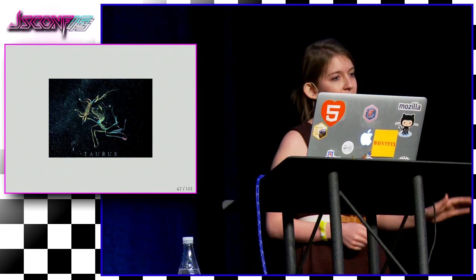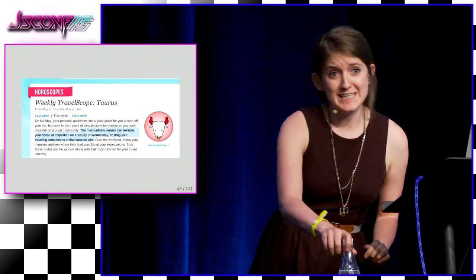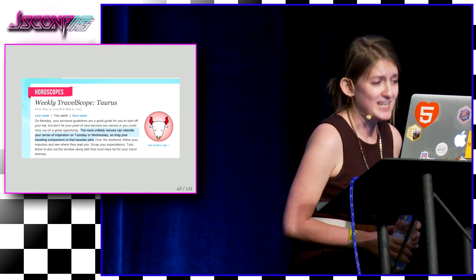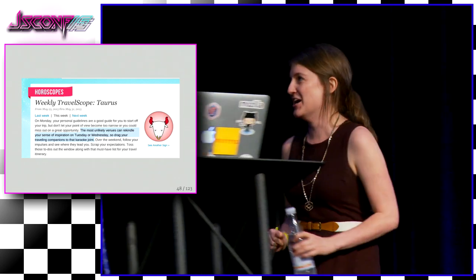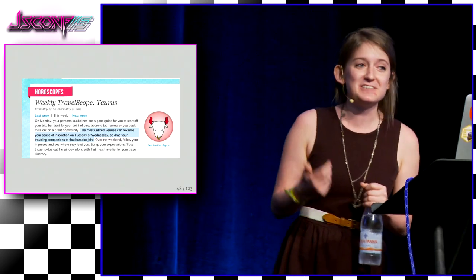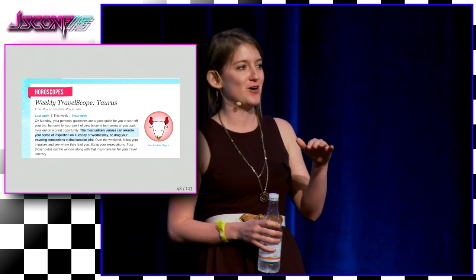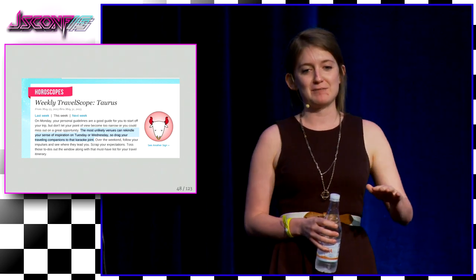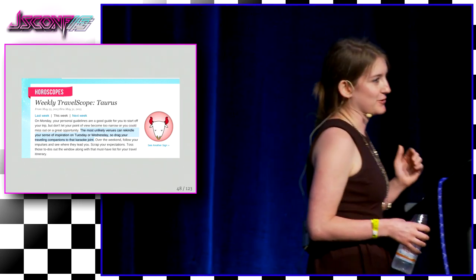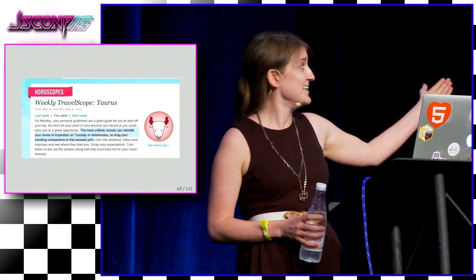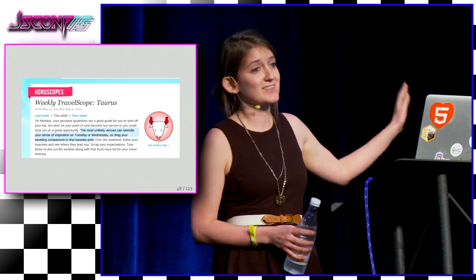But we need to be careful about the abstractions we make, because these abstractions turn into ideologies, and those ideologies are where we form our culture and our community. This is a real horoscope — and maybe astrology is real, because I did rekindle my sense of inspiration on Tuesday by dragging my travel companions to a karaoke joint. Carl Sagan calls this fuzzy thinking: we saw patterns, but the objections we made with those patterns were wrong because they were built on the wrong underlying mechanisms. Bad abstractions are real problems.